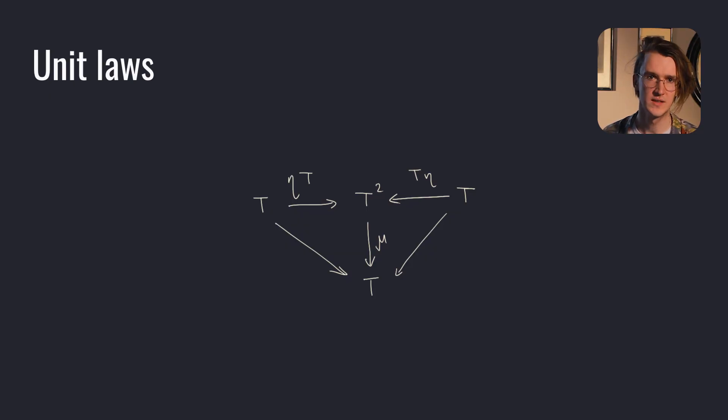Two unit laws, left and right, say that when we apply unit to T and then multiply, we get back T. We get back to where we started. Eta T adds a new T layer outside to the left. T eta adds inside or to the right. If the diagram commutes, the law is satisfied.